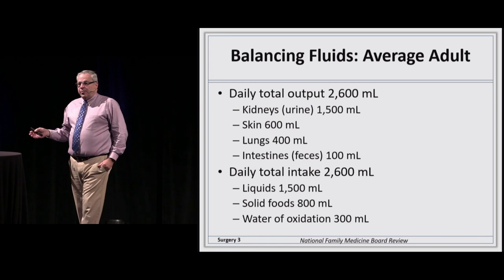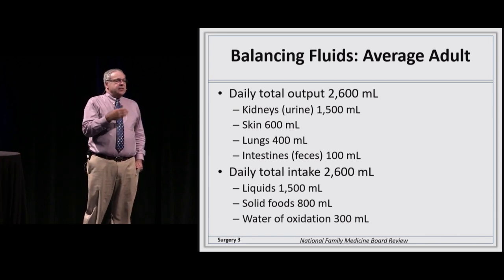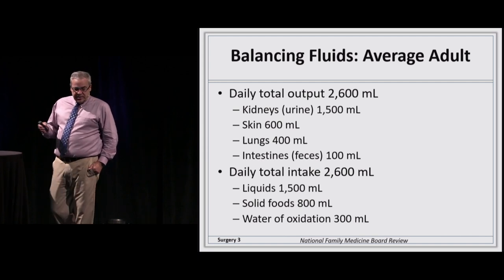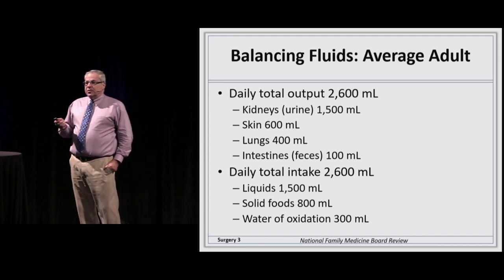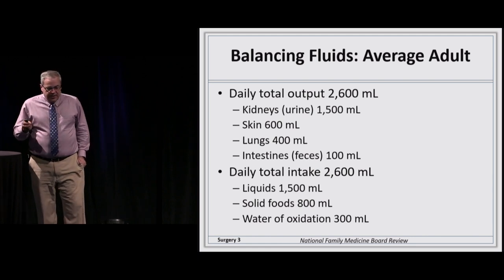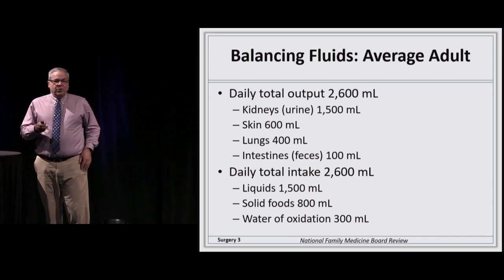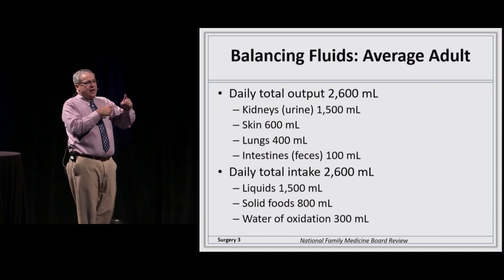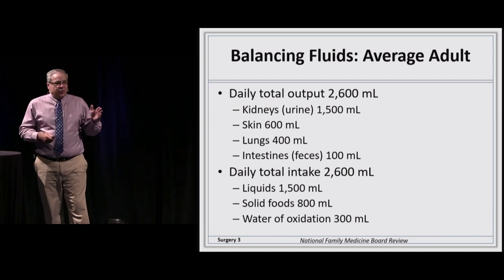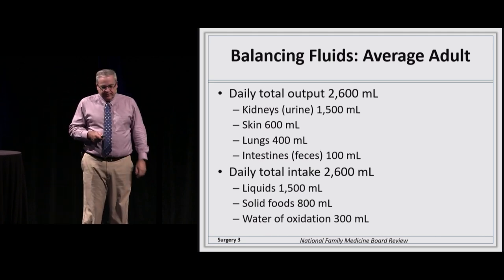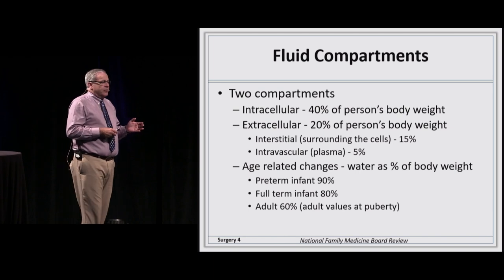The output comes 1,500 milliliters from the kidneys, 600 from the skin — through sweating and skin respiration — about 400 milliliters from breathing, and about 100 milliliters associated with feces. The intake is 1,500 milliliters in fluids, 800 milliliters in solid foods, and 300 milliliters from metabolic processes — the water of oxidation, related to the Krebs cycle where water spins off going from ADP to ATP.